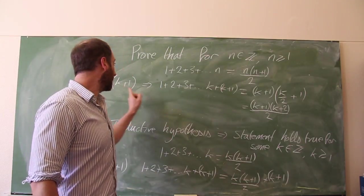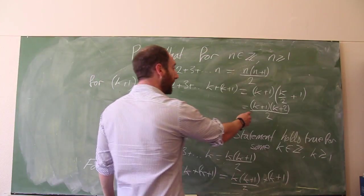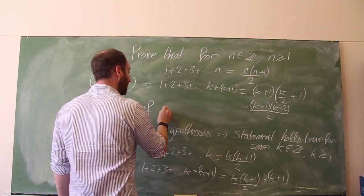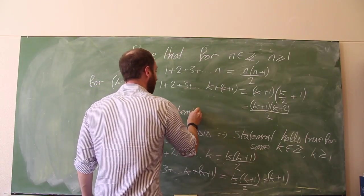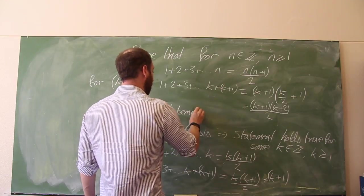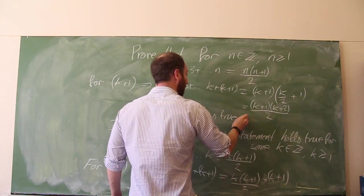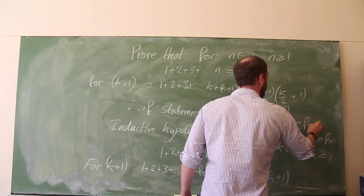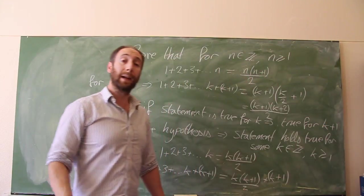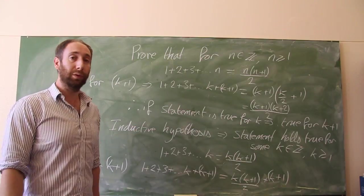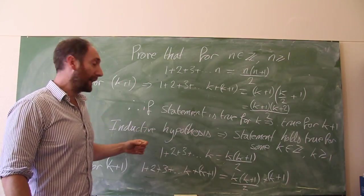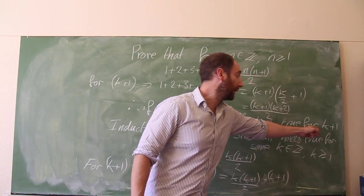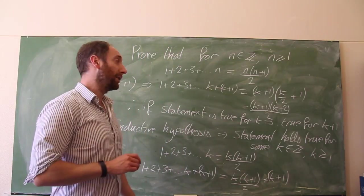But that is precisely the statement that you would get for k plus 1. Therefore, if statement is true for k, that implies it's true for k plus 1. That's enough, so we have now proved by the base case, proving the base case, and proving that using the inductive hypothesis with the inductive step, that it does hold true for k plus 1, we've done it. That's all you need to do.